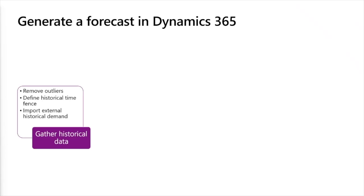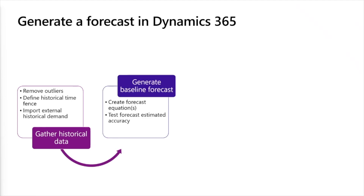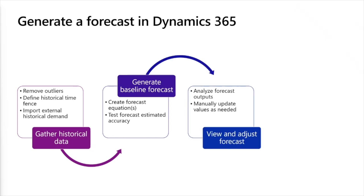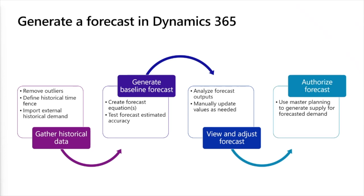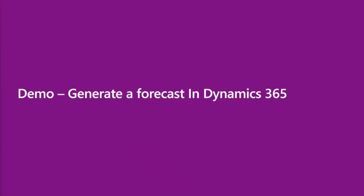Now let's walk through the different steps of our high-level process. First, we gather our historical data. If we do not have enough history yet in Dynamics, we can use the data migration framework to import external historical demand. Next, we trigger forecast generation on the Azure side, which will create the forecast model and test the mean absolute percent error for the model. Once we're done in Azure, we can review the generated forecast in Dynamics and update the values manually as we see fit. When the forecast is satisfactory, we authorize the forecast, which publishes it to the system for use in planning and other activities. Now let's transition over to the system to demonstrate what the process looks like.